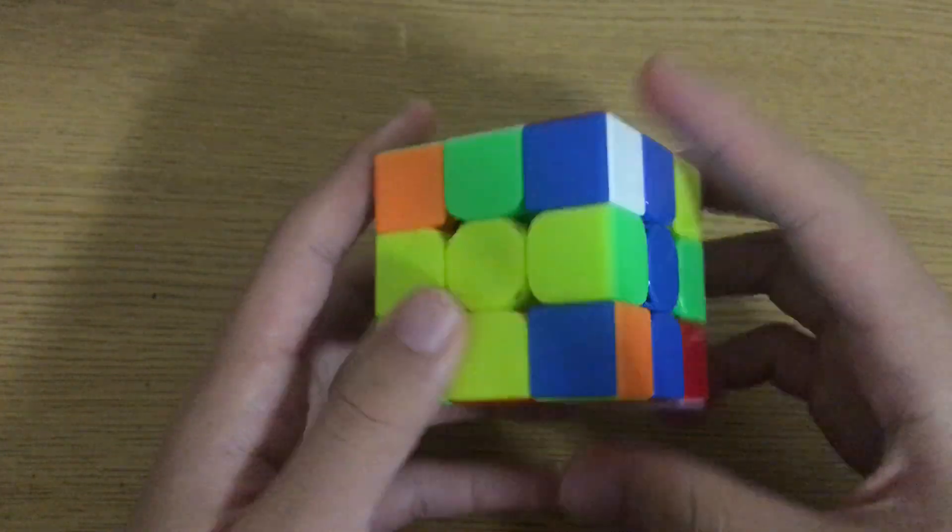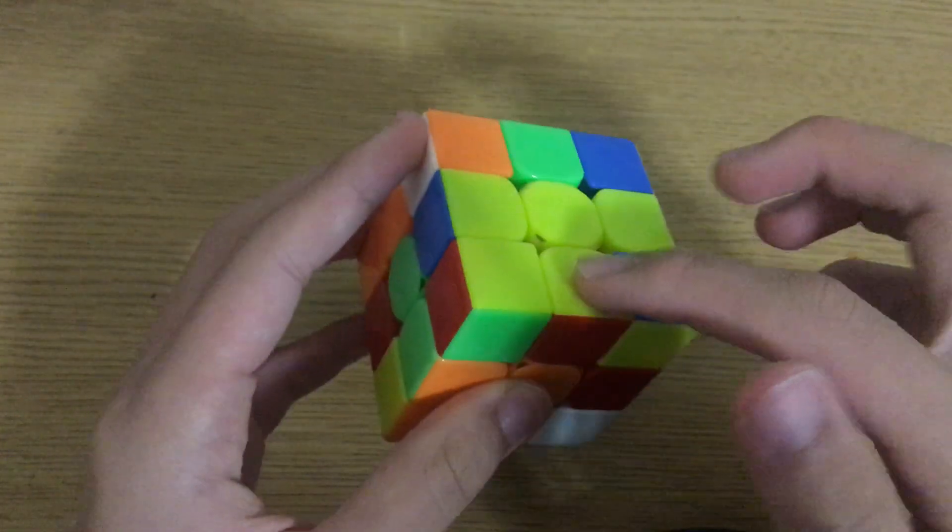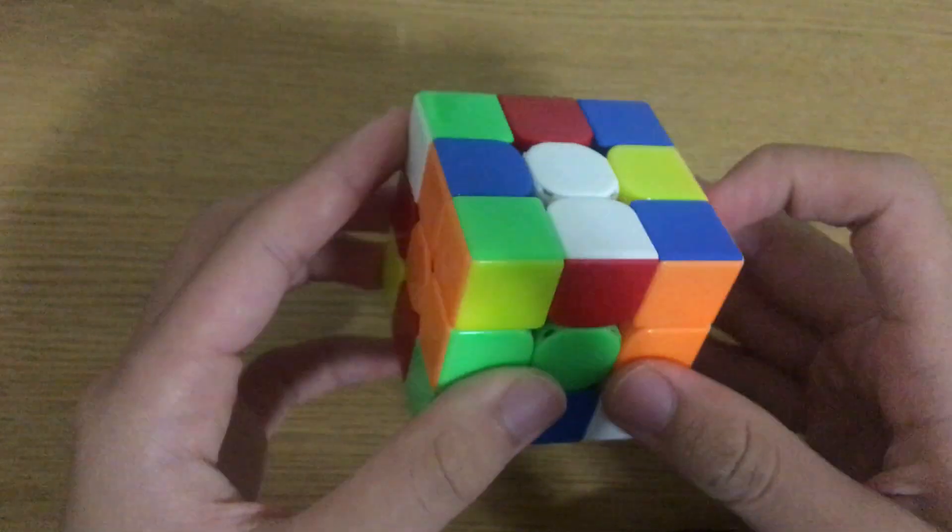Juliet starts with a yellow X cross. Her cross pieces are here, here, here, and here respectively.